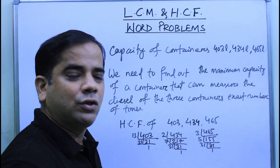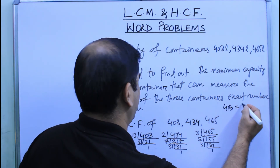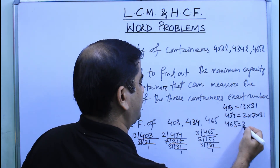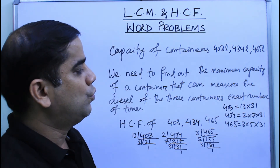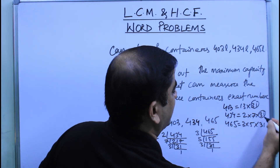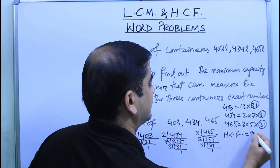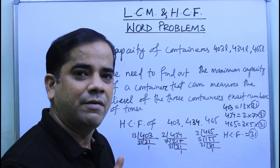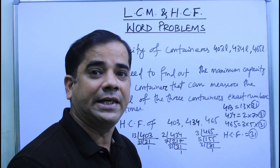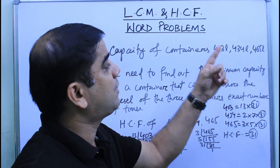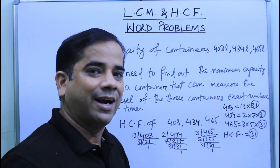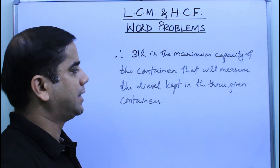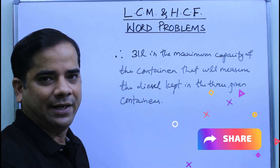Using prime factorization: 403 = 13 × 31; 434 = 2 × 7 × 31; and 465 = 3 × 5 × 31. The only common factor is 31, so HCF = 31. That means 31 is the highest number that will divide 403, 434, and 465 completely. Therefore, 31 liters is the maximum capacity of the container that can measure the diesel in the three containers an exact number of times.